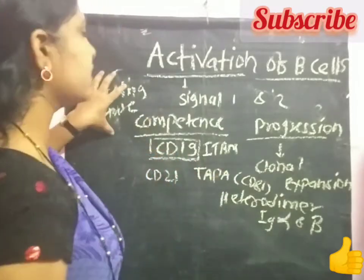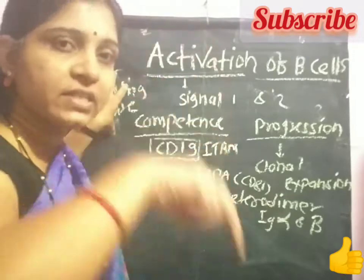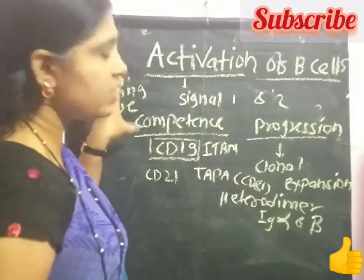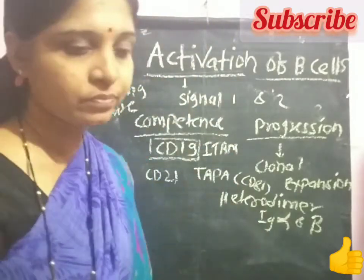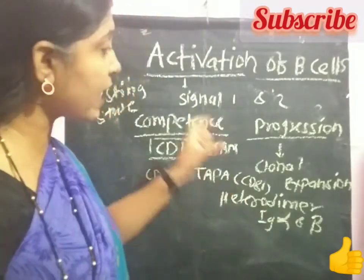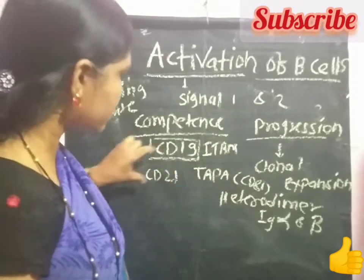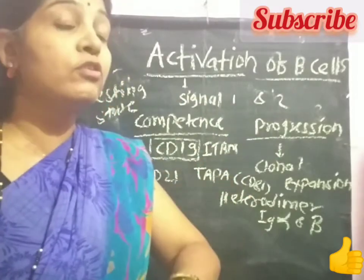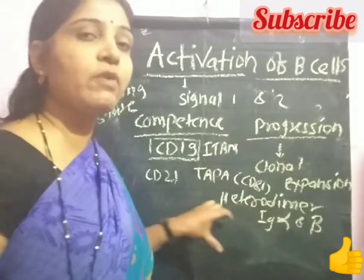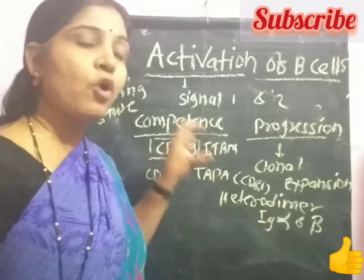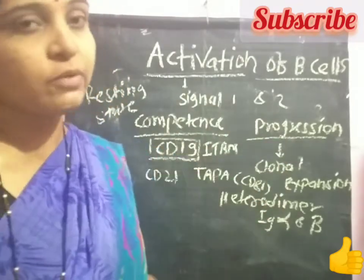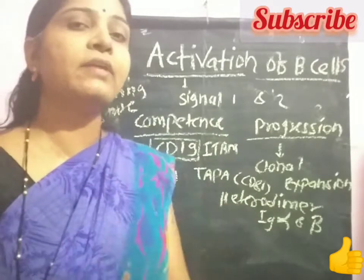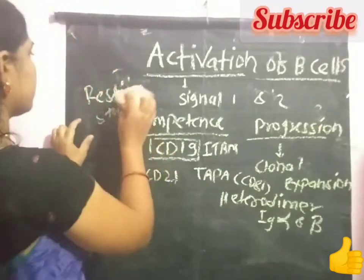These resting B cells, upon interaction with the antigen, become activated. That is why these other surface molecules are required — they are needed for the proper signal transduction pathways essential for the activation of B lymphocytic cells.